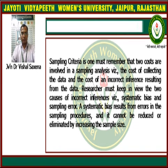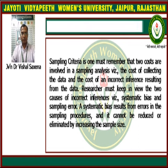A systematic bias results from errors in the sampling procedures and cannot be reduced or eliminated by increasing the sample size. The researcher must be alert to this point and should ensure that systematic bias is generated in very low quantity.